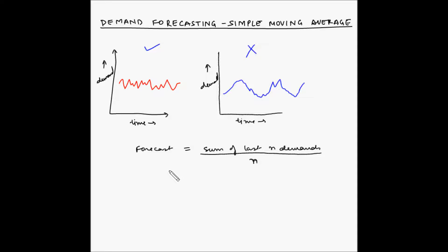Once we know the actual demand for a time period — after that month or period is over — in order to forecast the following period we will drop the oldest demand that we had considered in the previous formula and include the actual sales which we got after the month completed.